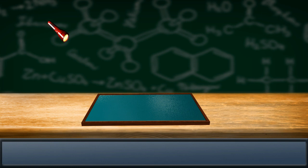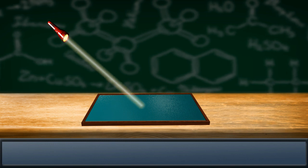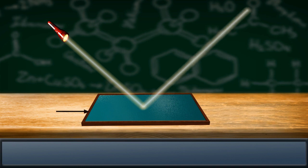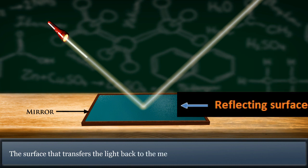Reflection is a phenomenon whereby a light ray hitting a smooth polished surface or mirror gets transferred back to the same medium. The surface that transfers the light back to the medium is called the reflecting surface.